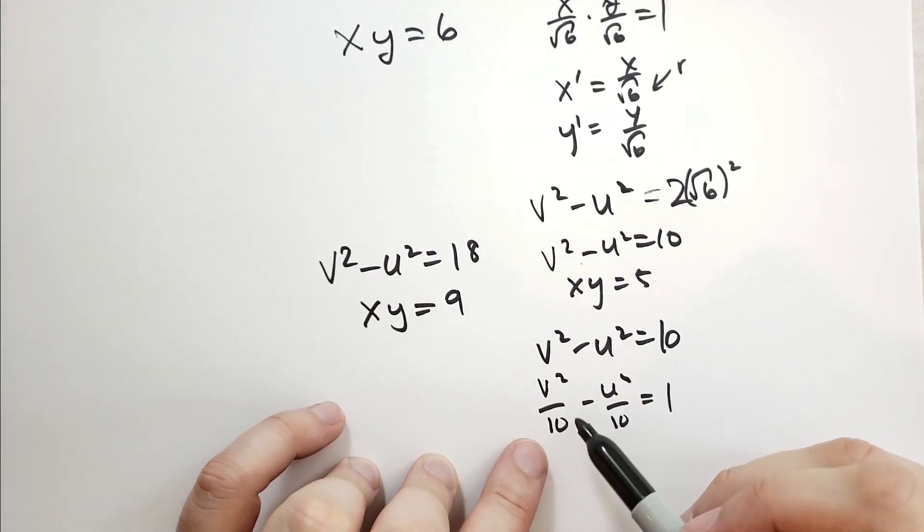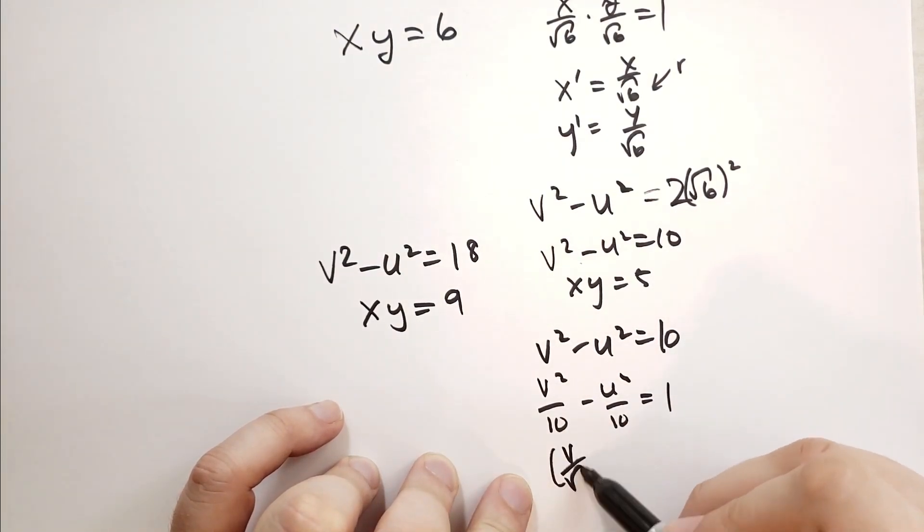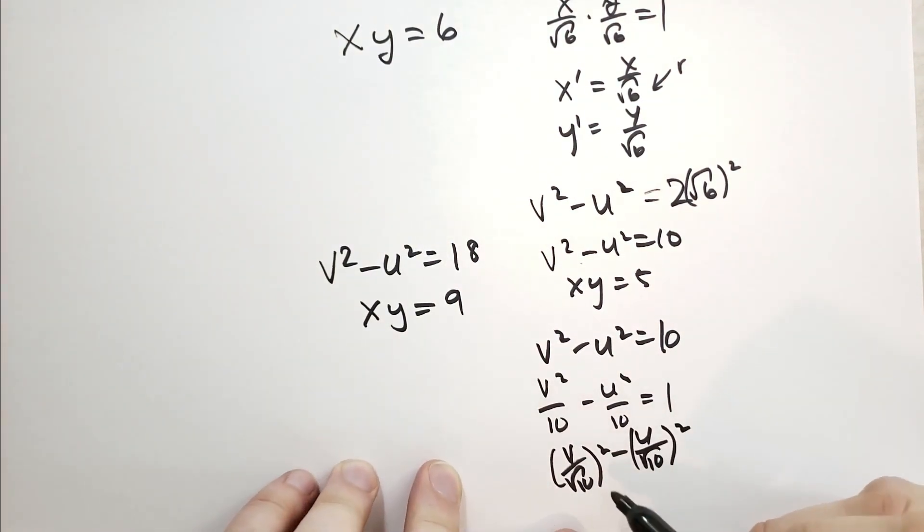And you might be tempted to say, well, this is just v squared scaled down by root of 10, but it's really not. This is v over root of 10 squared minus u over the square root of 10 squared. So you have to scale by the root of 10 because these are squares and those aren't.